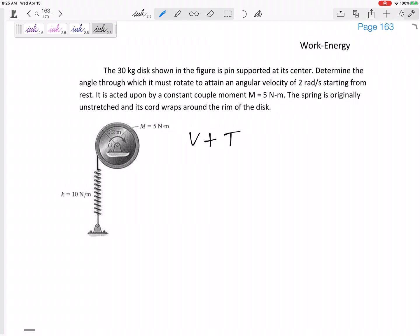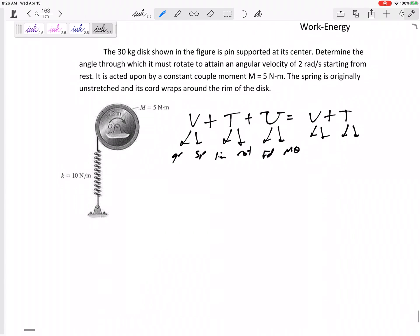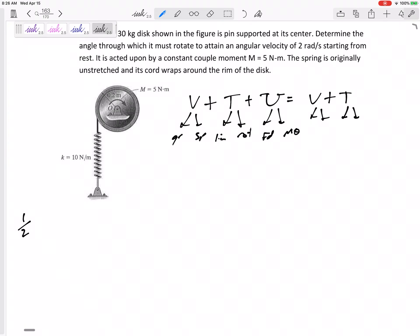So, potential plus kinetic plus non-conserved work equals the final potential plus kinetic. Potential could have gravity and spring. Kinetic could be linear and rotational. U could be force or moment. So, every single term has two terms that it could be. I like to go ahead and write the whole equation. The potential energy due to spring is one-half kx squared. Potential energy due to gravity is mgh. The linear kinetic energy, one-half mv squared. The rotational kinetic energy, one-half I omega squared. Plus fd plus m theta.